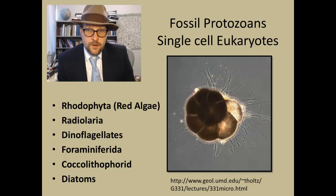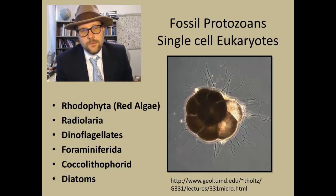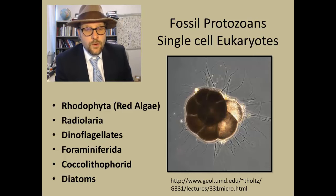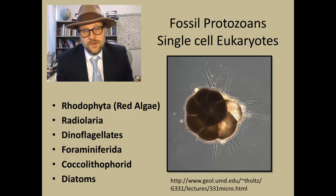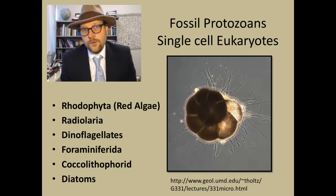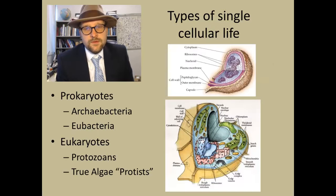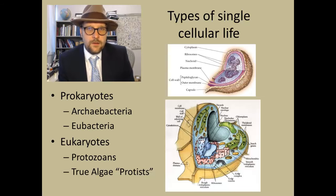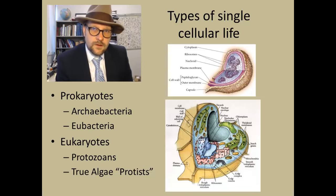The fossil record of eukaryotes picks up heading into the Phanerozoic. There are different types of single-celled eukaryotic organisms — the protozoans — including red algae (rhodophyta), radiolarians, dinoflagellates, foraminifera, coccolithophores, and diatoms. We'll talk more about these later, but these microorganisms leave behind an excellent fossil record and are very useful for micropaleontology. We can divide single-celled life into prokaryotics — archaeobacteria and eubacteria — and eukaryotes, including the protozoans and true algae of the protists.